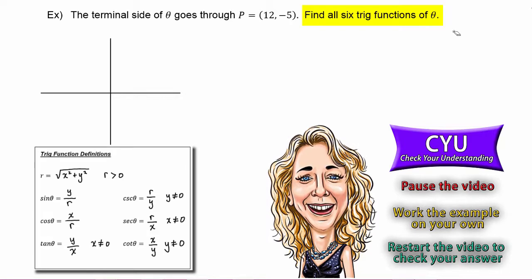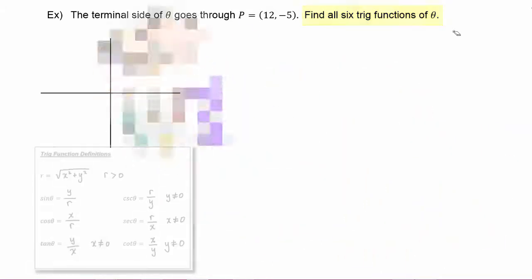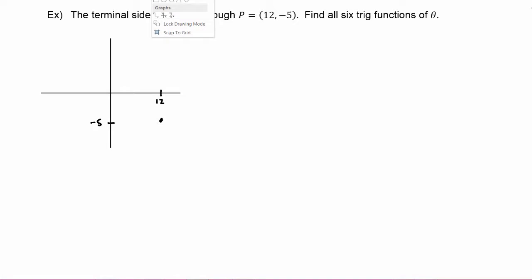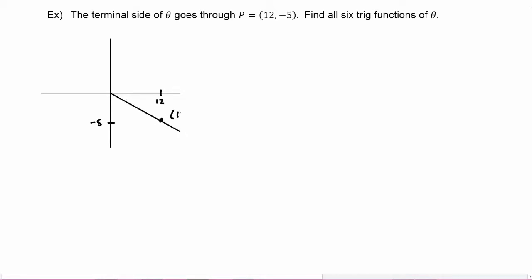Okay, let's see how you did. The first step is to plot the point, which we know is (12, −5). We approximate it on the graph — the x-coordinate is 12 and the y-coordinate is −5 — and we know that the terminal side of theta has to go through that point. So this is (12, −5).